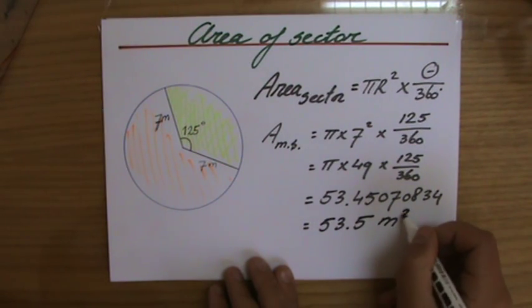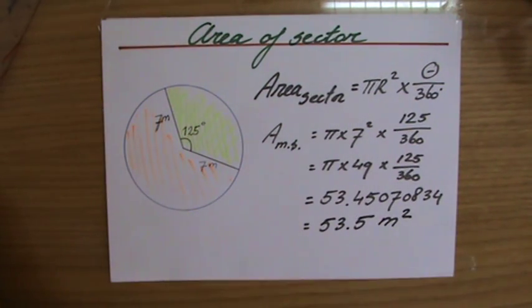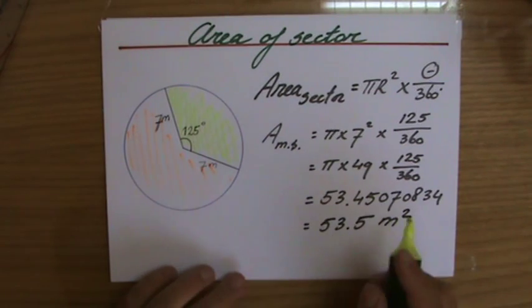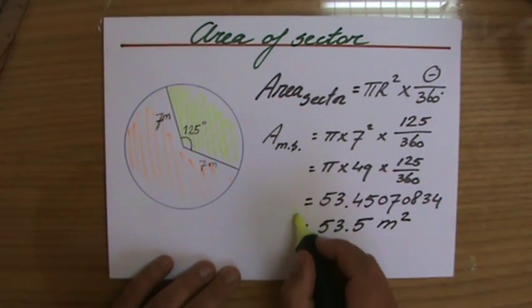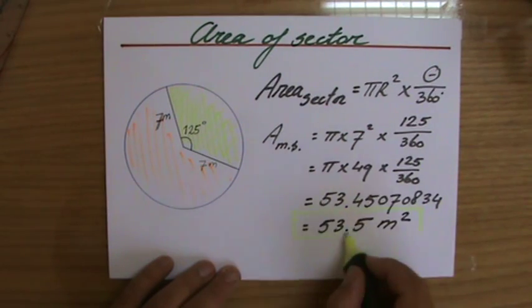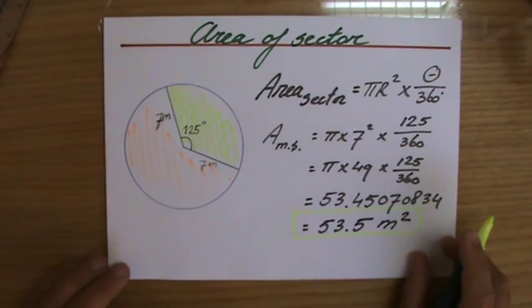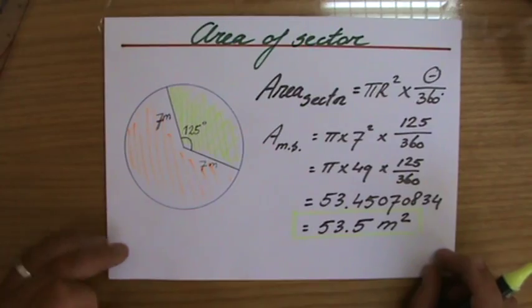So the area of a sector - a sector is a part of the circle enclosed by two radii, by two radiuses, multiple two of them over there - 53.5 meter squared.